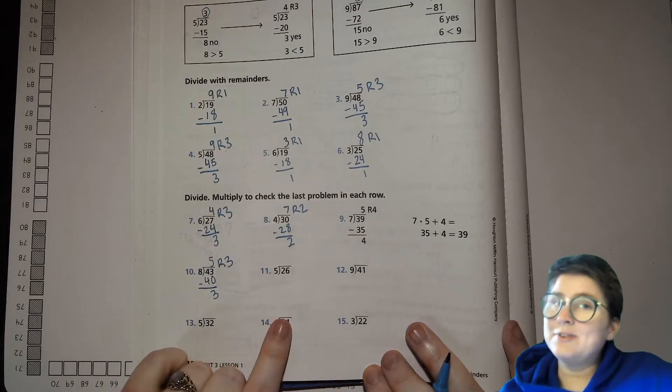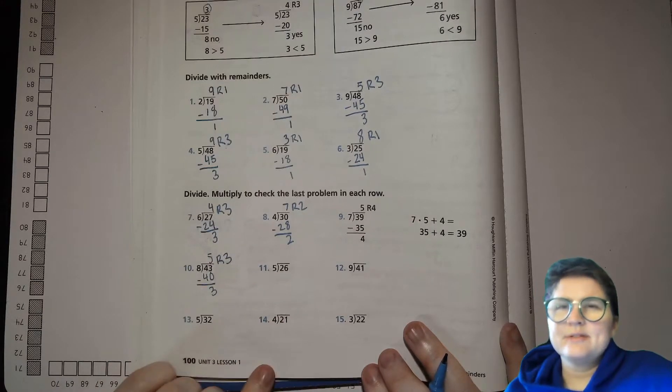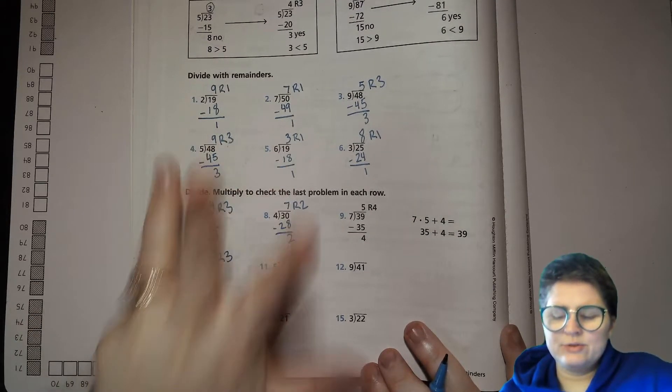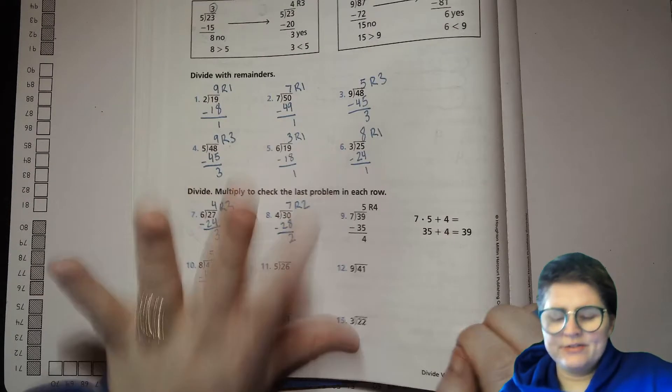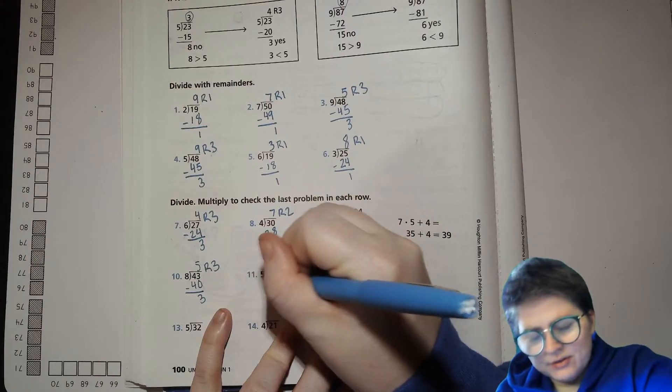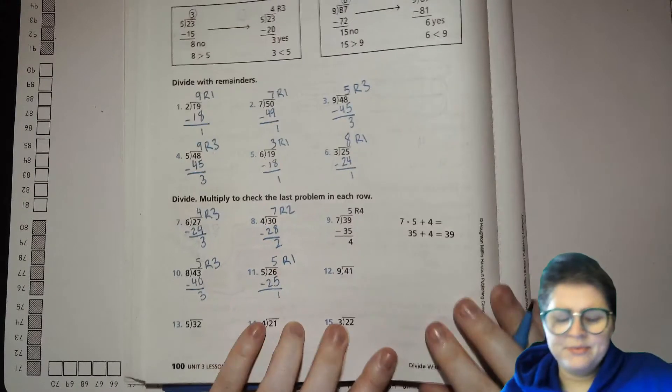If you're feeling up for it, go for these on your own. 5 goes into 26 how many times? 15, 20, 25, 30. 30 is too many. 25 is just enough and we'll have one left over.